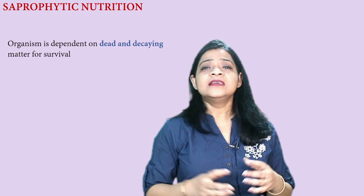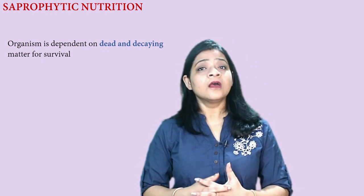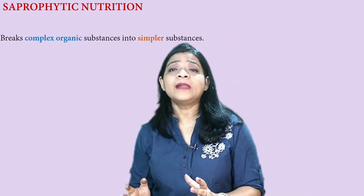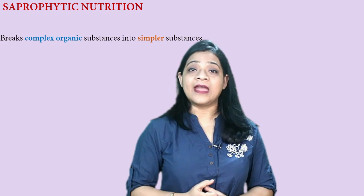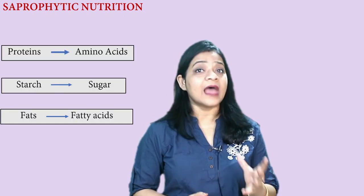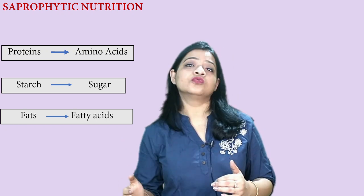The second type of heterotrophic nutrition is saprophytic nutrition. In this process, the living organism is dependent on dead and decaying substances for their survival. Saprophytes play a vital role in the ecosystem by keeping the environment clean. They break down complex organic substances into simpler substances — for example, proteins into amino acids, and starch into sugars.